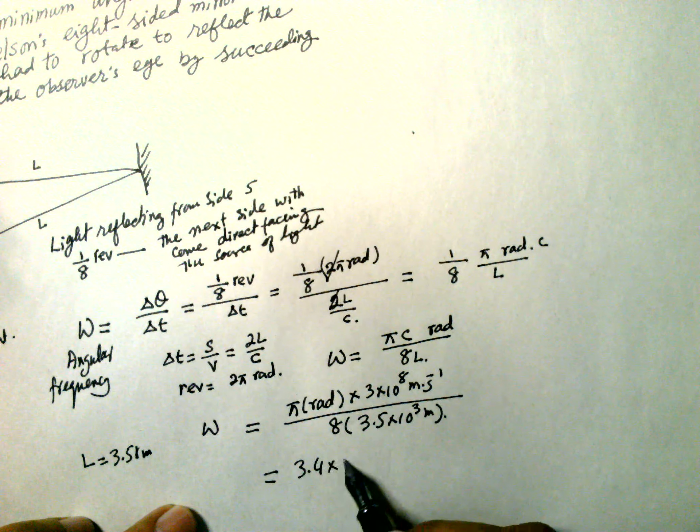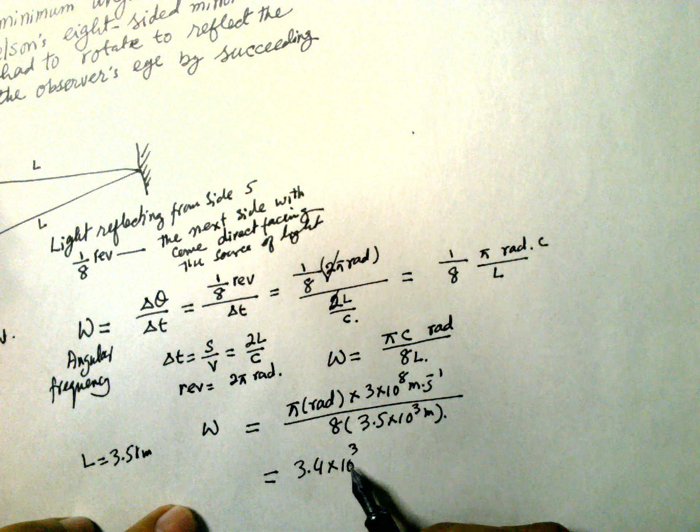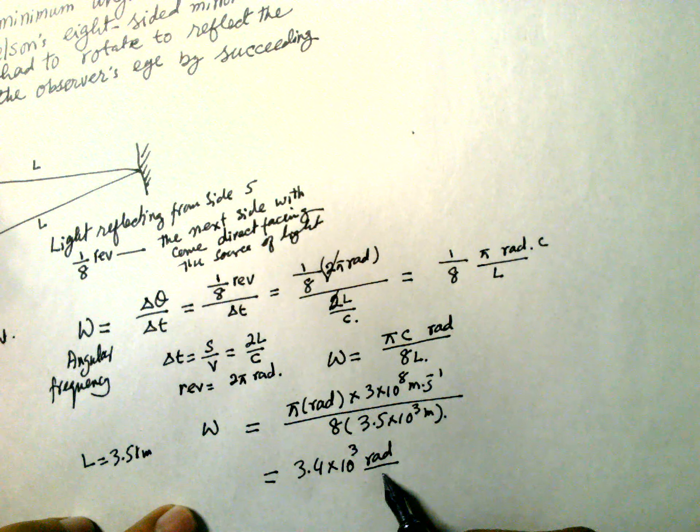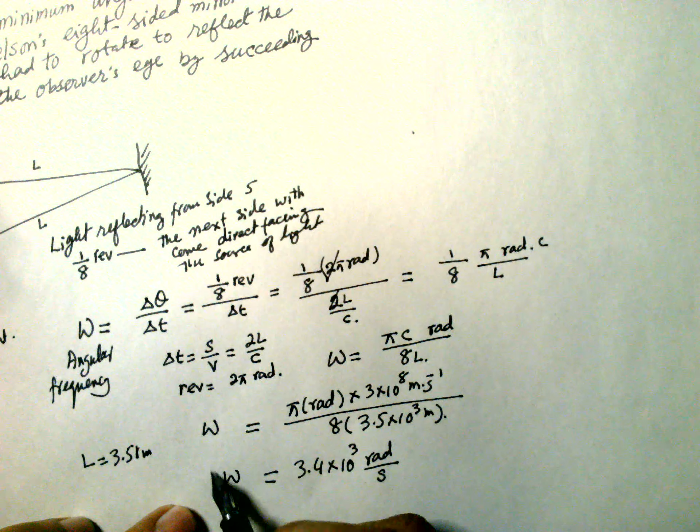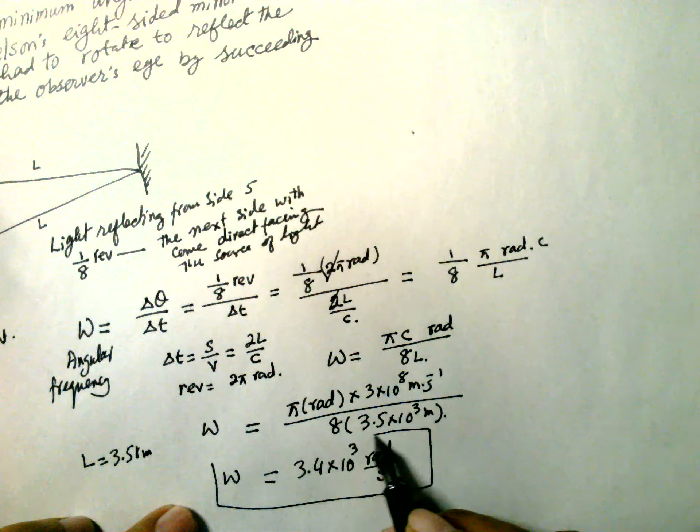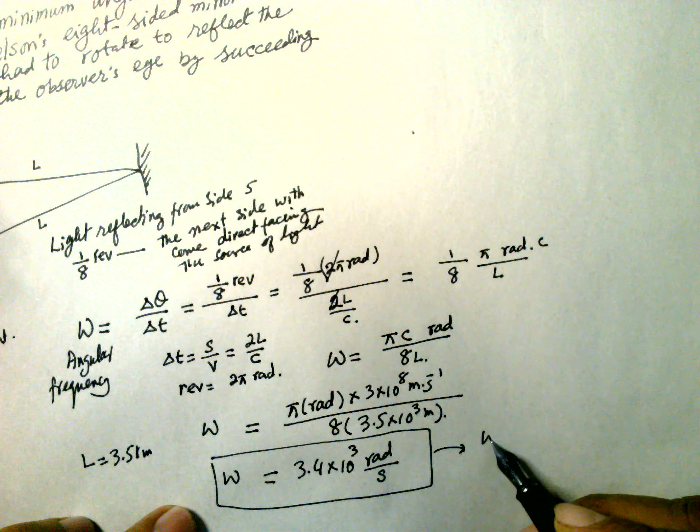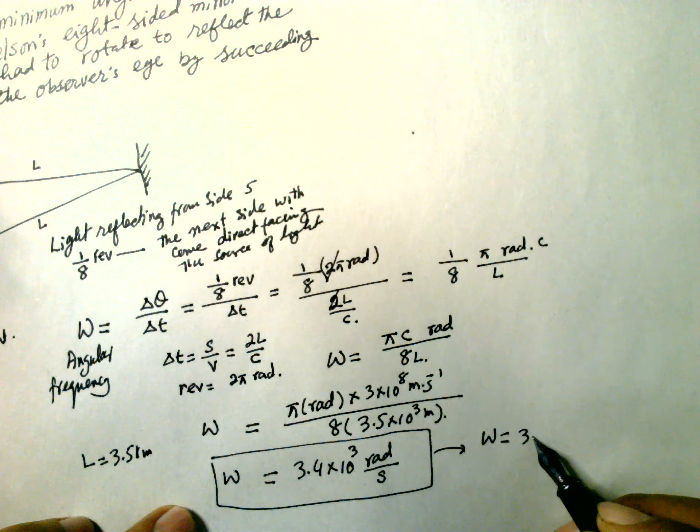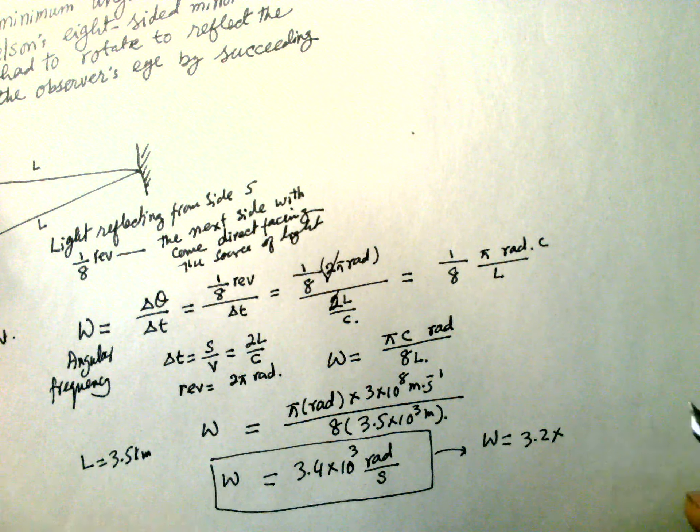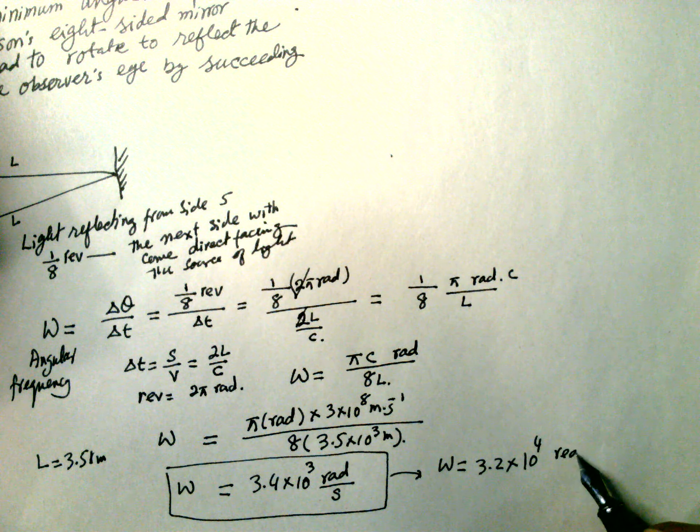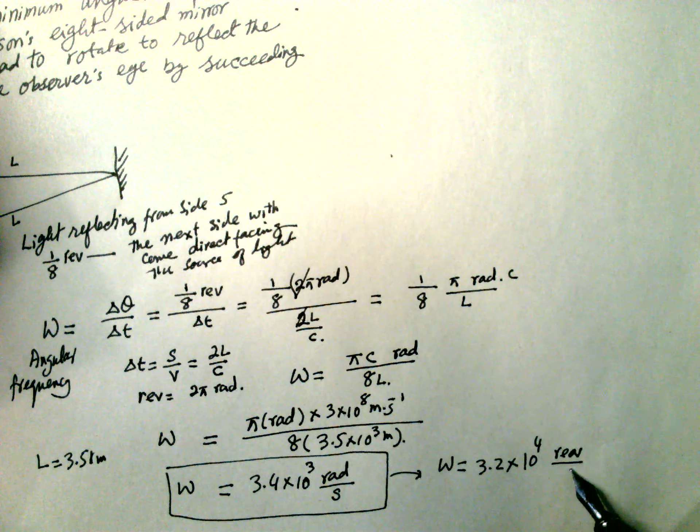...3.4×10^4 radian per second. This is angular speed. Or in revolution, omega is equal to 3.2×10^4 revolution per second.